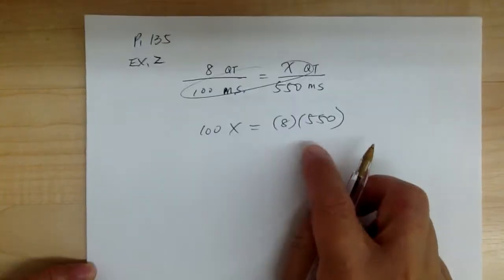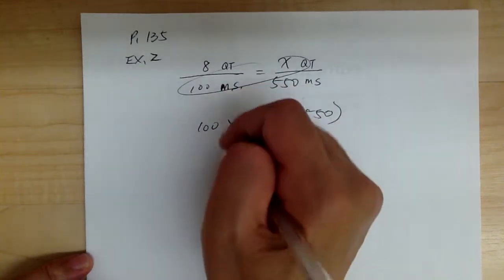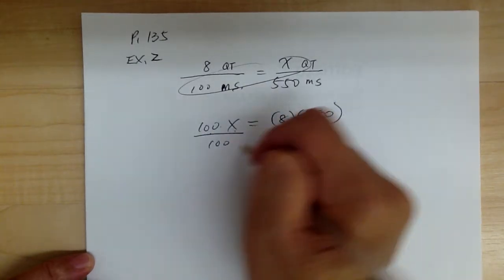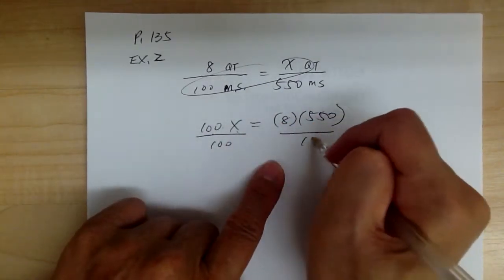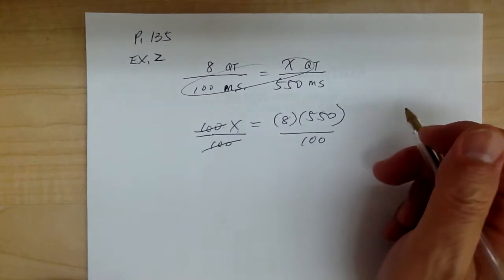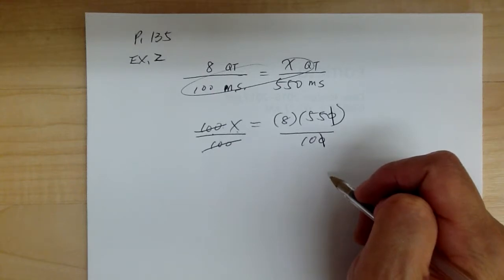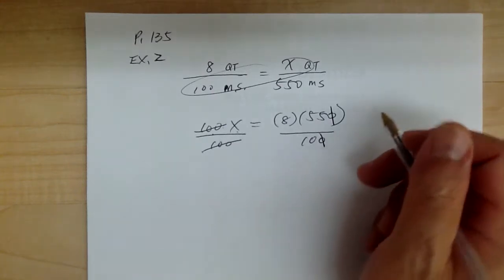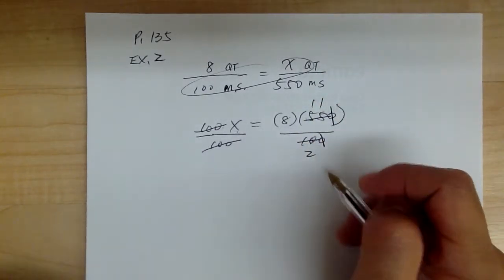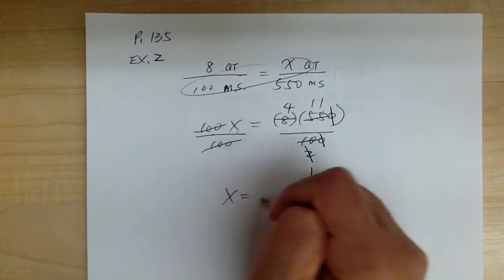Don't multiply out — when you multiply into a huge number, then you have to waste time trying to reduce. To solve, this is 100 times X, so to undo times, you have to divide. When you divide, you have to do the same on the other side — that's what equal means. This cancels out. Cancel one of the zeros. This is divisible by 5: divide by 5, I get 11; divide by 5, I get 2. And 2 and 8 are divisible by 2: divide by 2, I get 1; divide by 2, I get 4. So X equals 44.